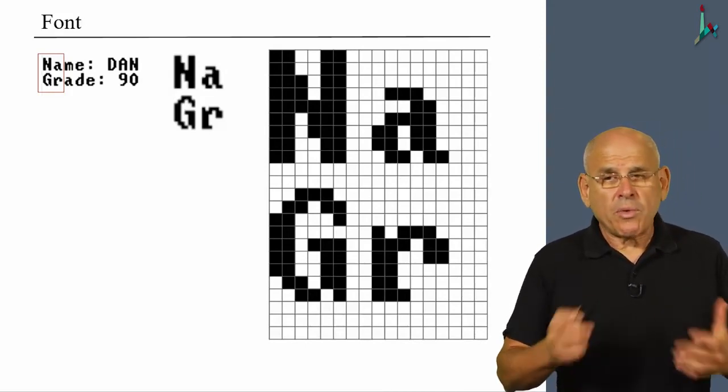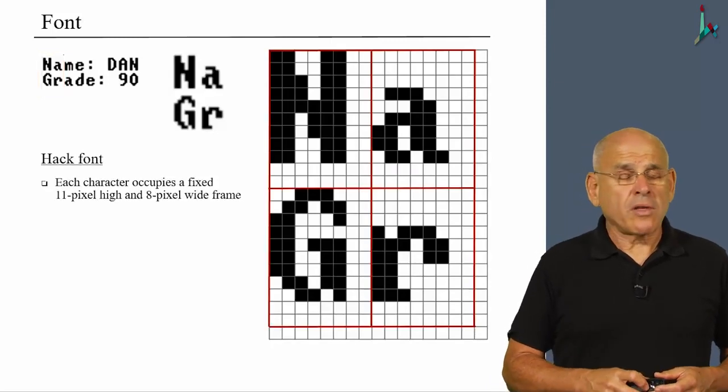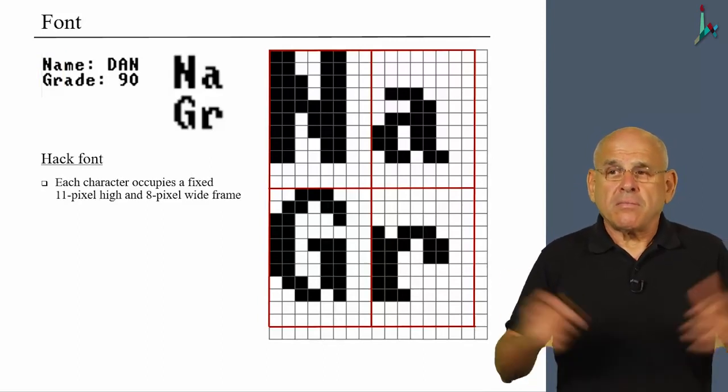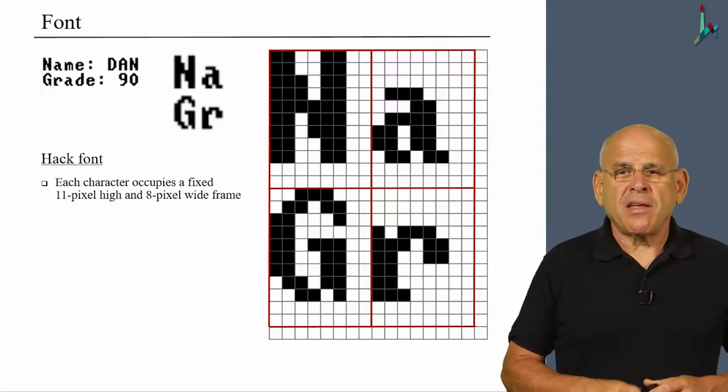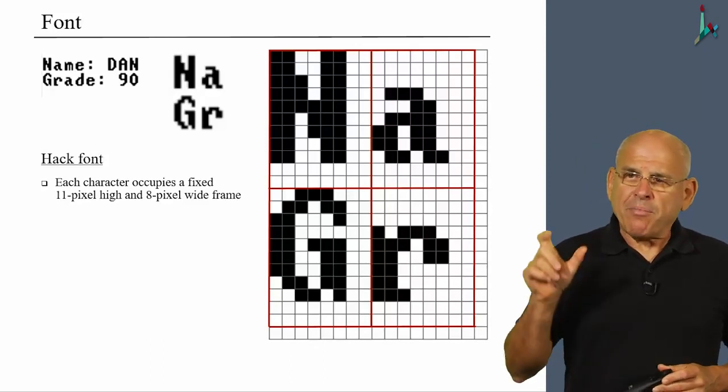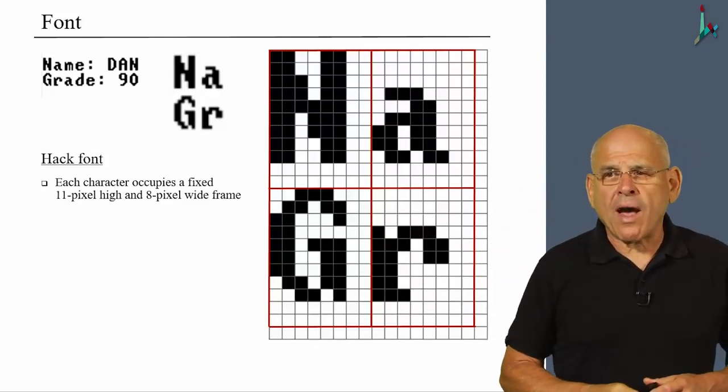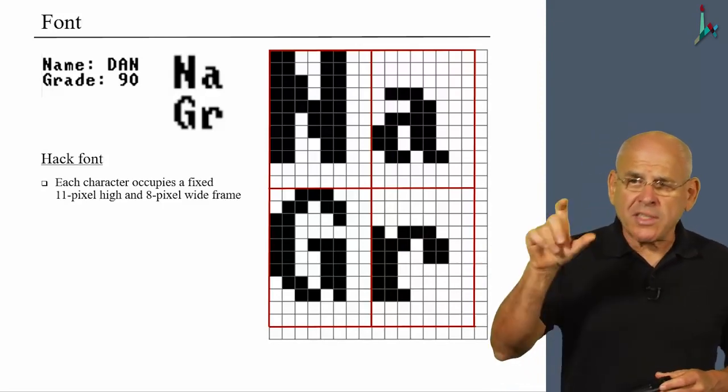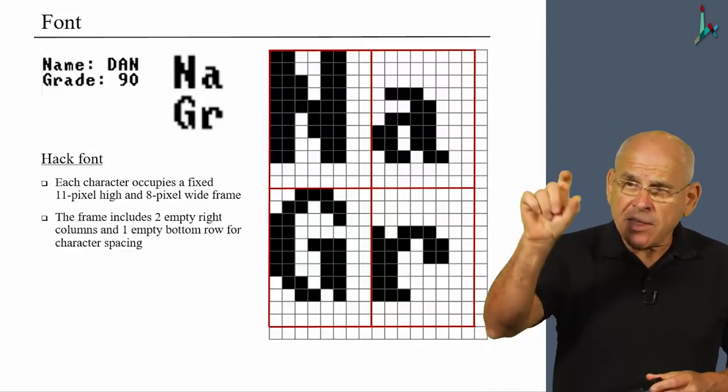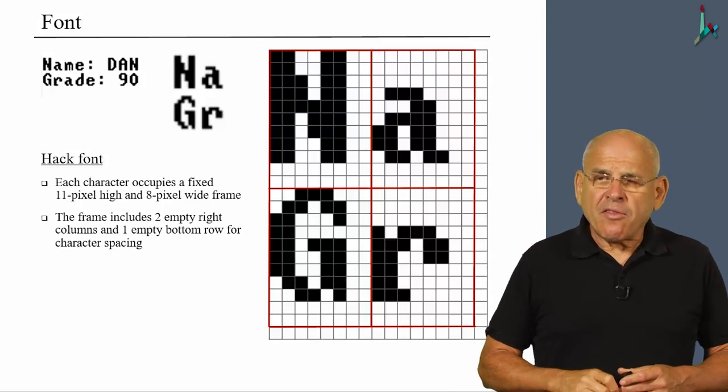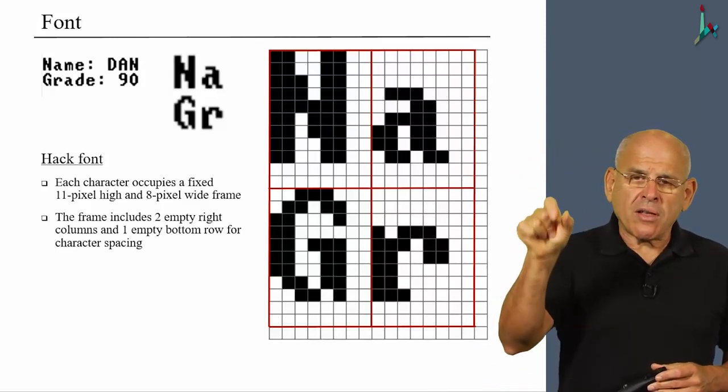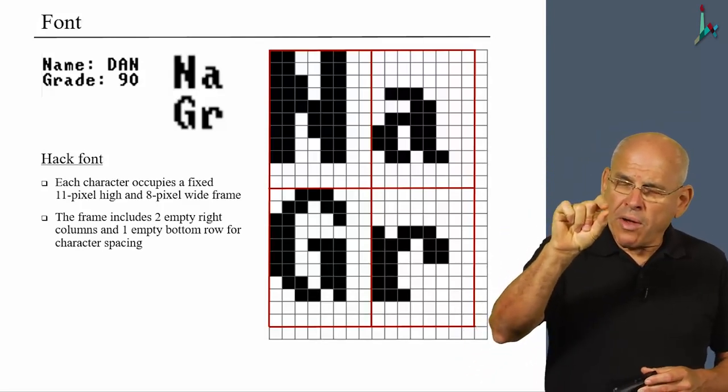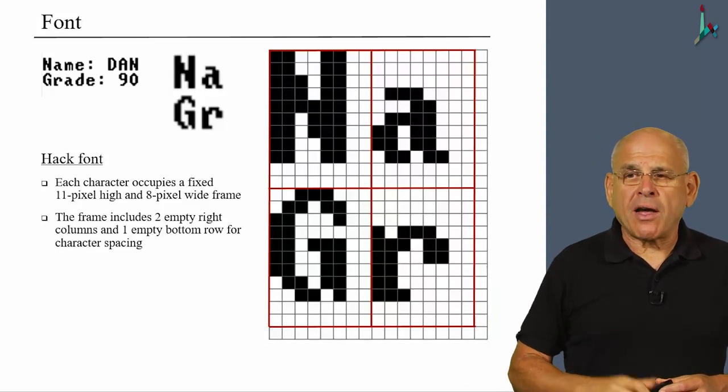And we see that what we have here is what is called a font. The Hack font, by design, occupies a fixed area of 11 pixels high and 8 pixels wide to represent every character in the character set. We call this area frame. If you look at these frames, you will see that the frame includes two empty columns on the right for character spacing.